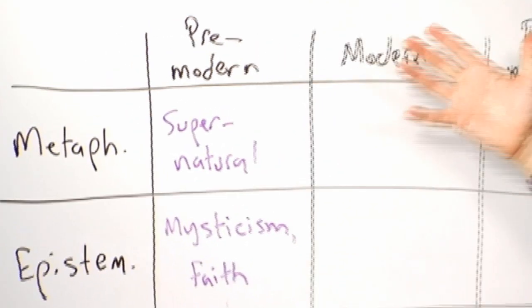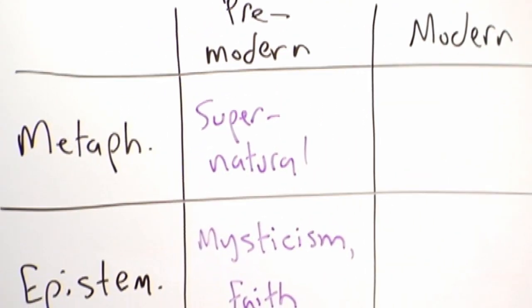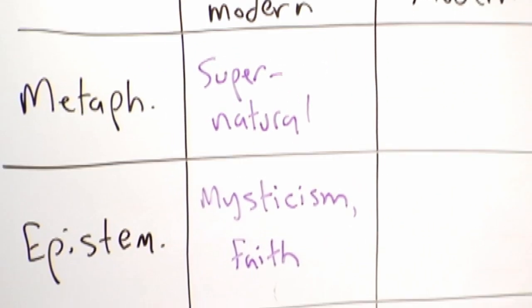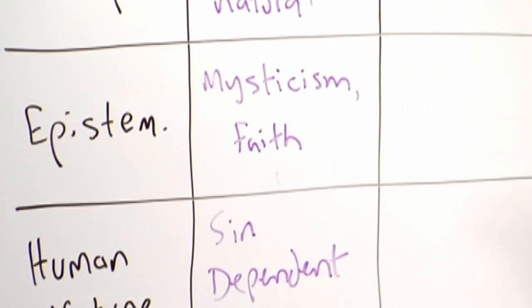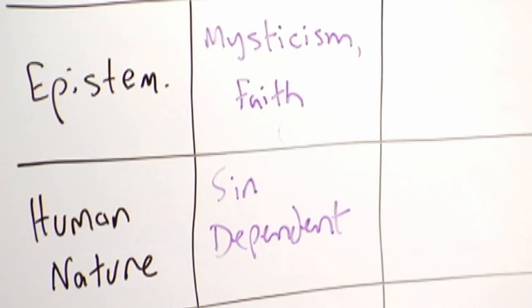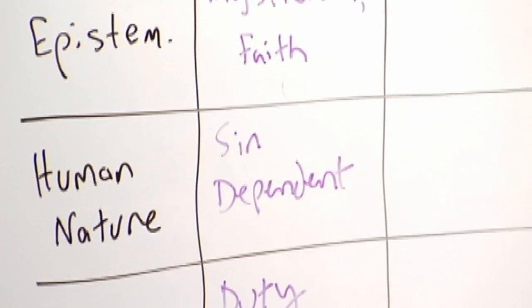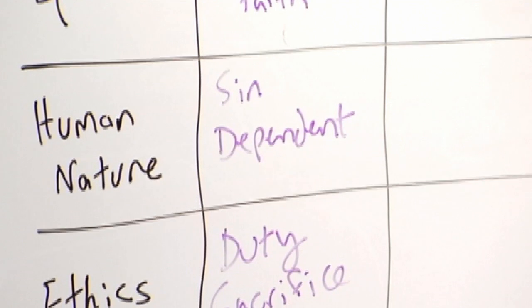All right, so this set of philosophical principles here, which we've talked about earlier in the semester, are characteristic of what we call the feudal world, broadly speaking, or at least in the Western context, the medieval world.